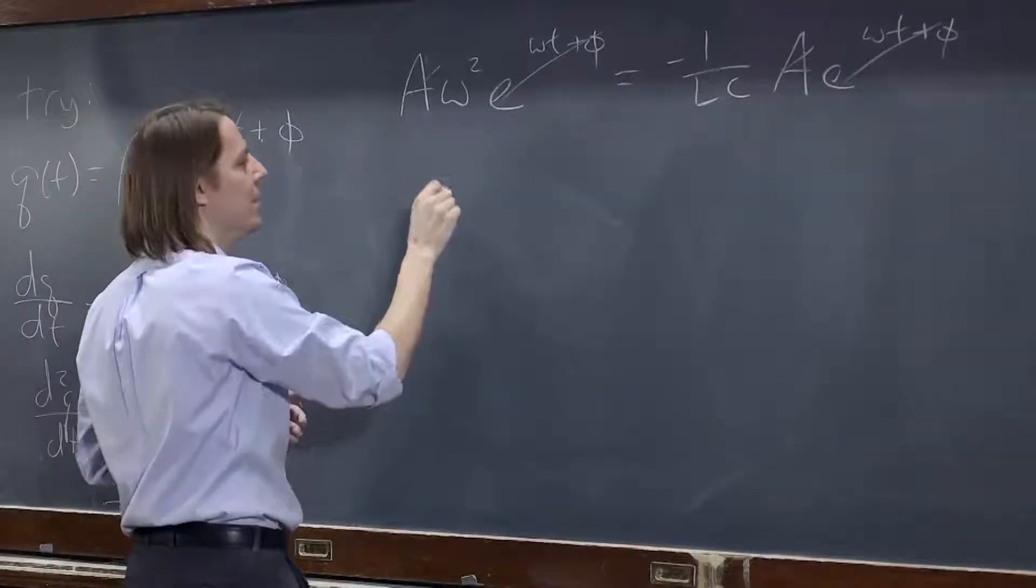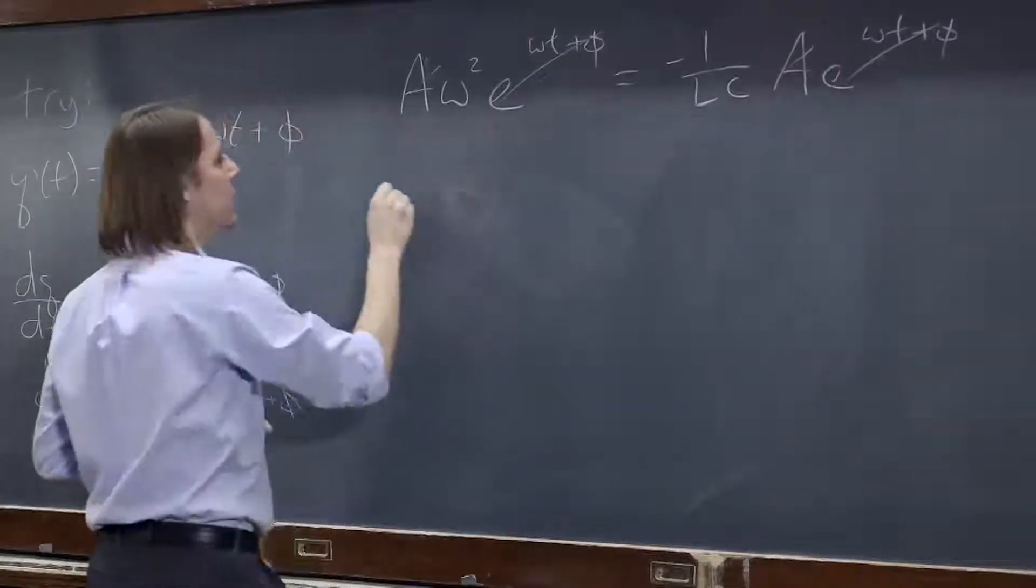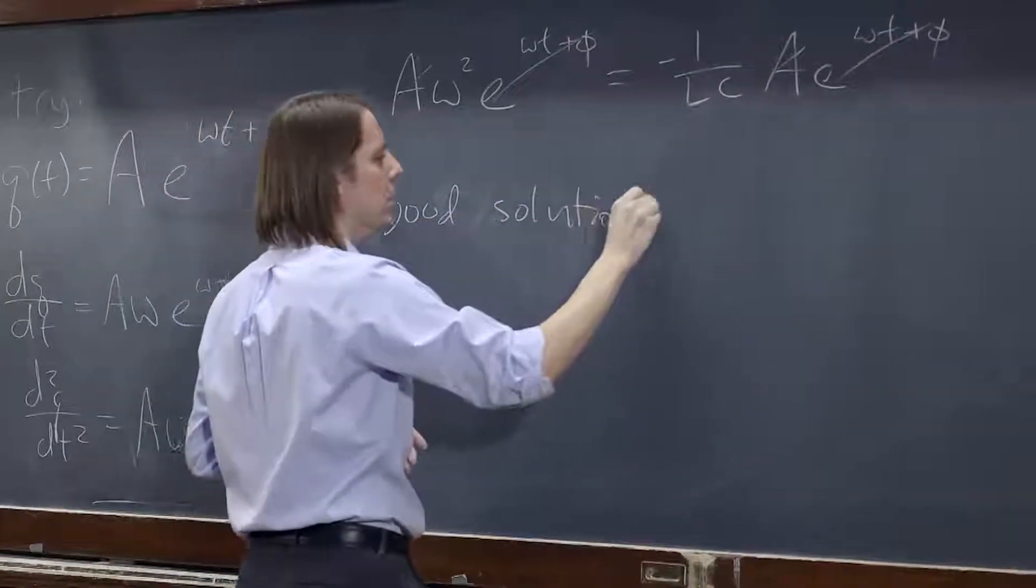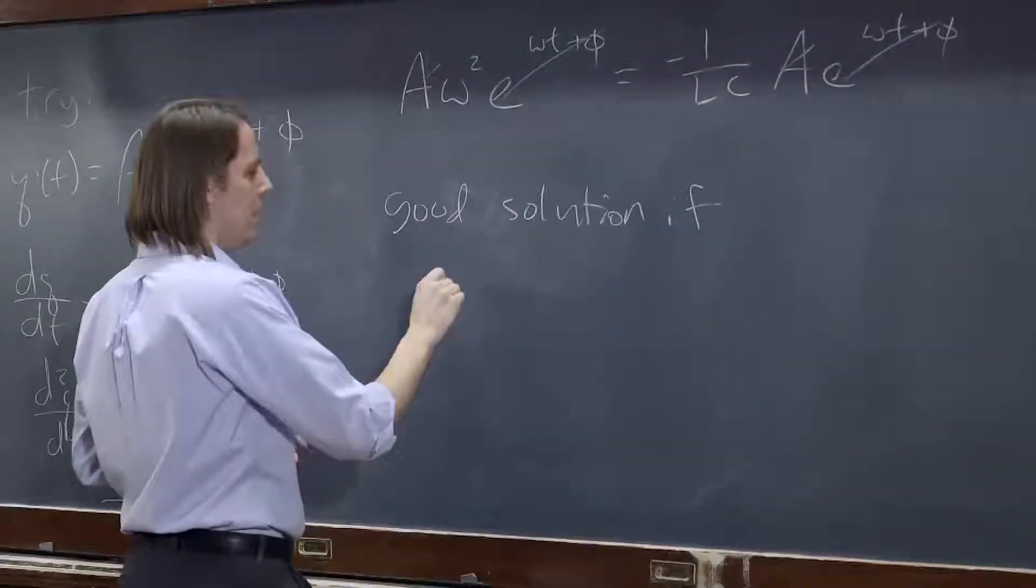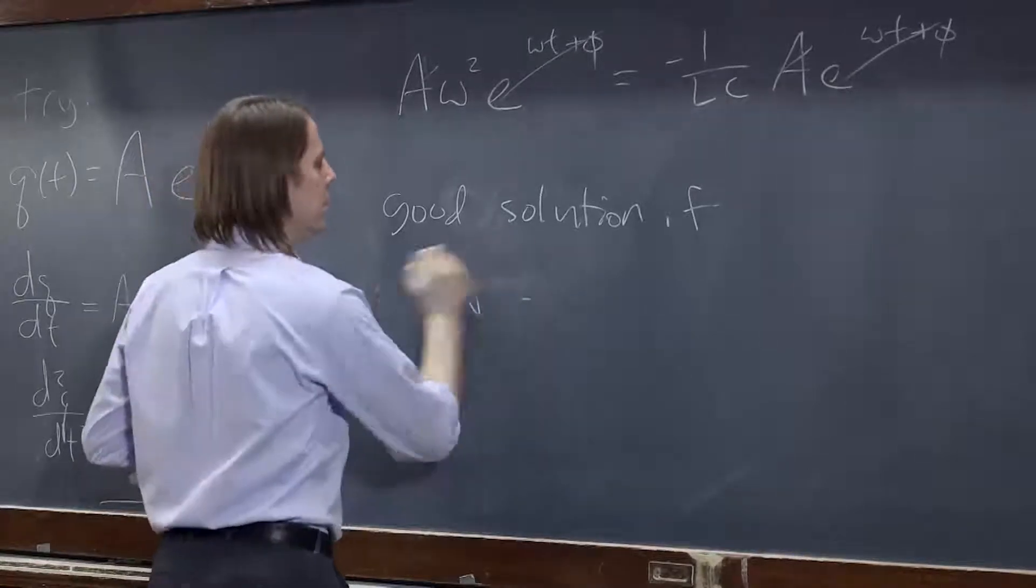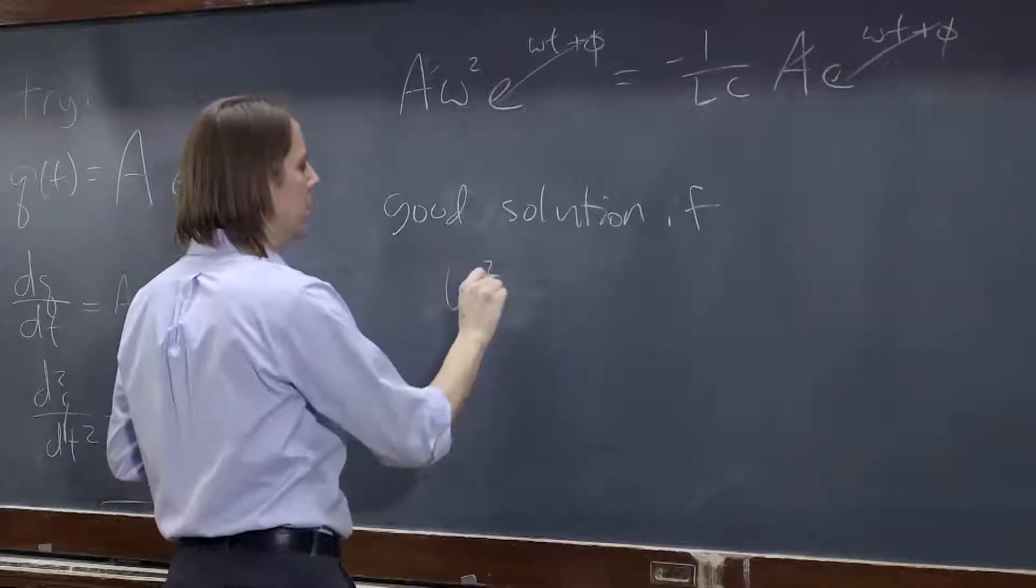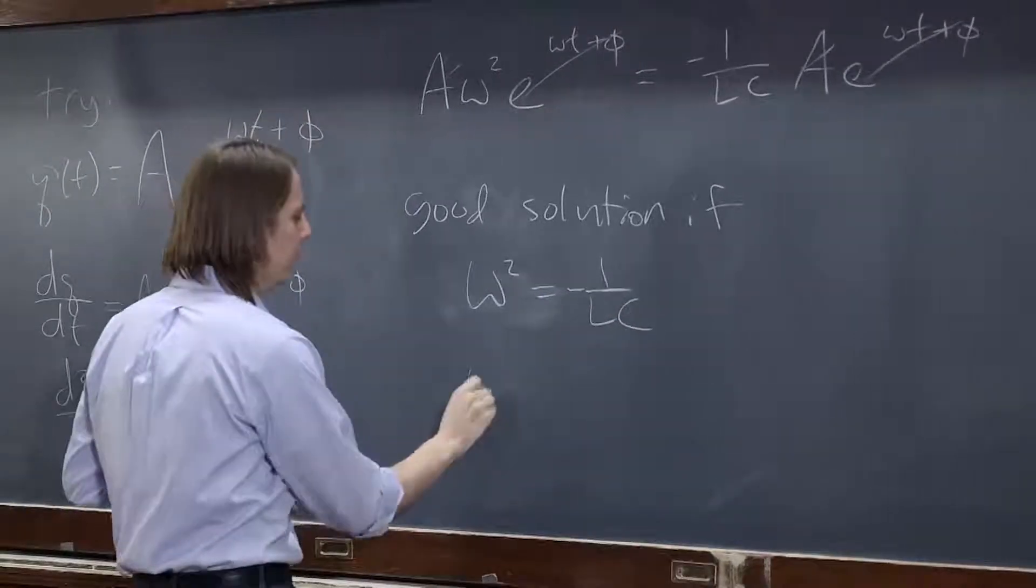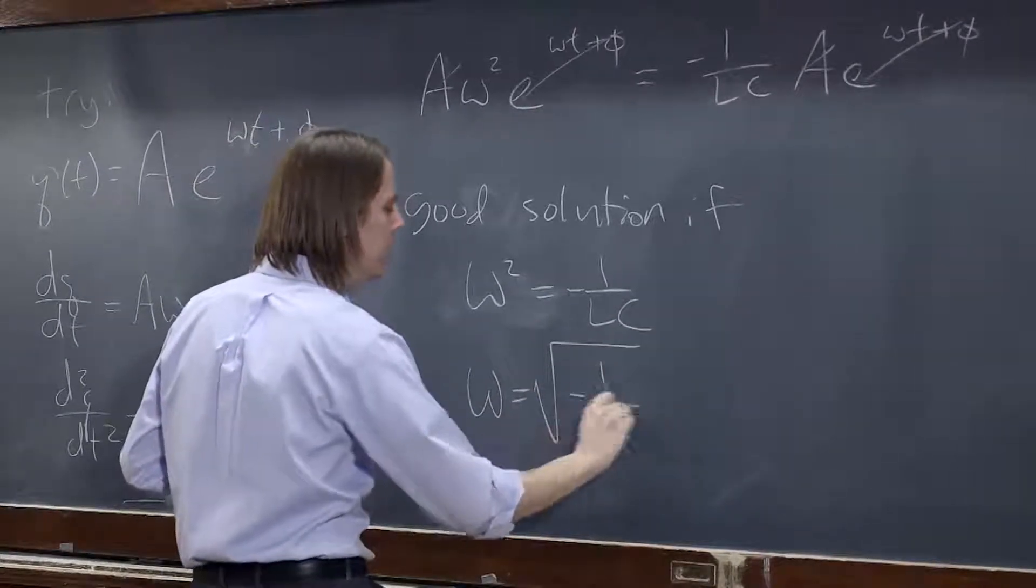I only care about this omega, and it says it's a good solution if omega squared is minus one over lc, therefore if omega is the square root of minus one over lc.